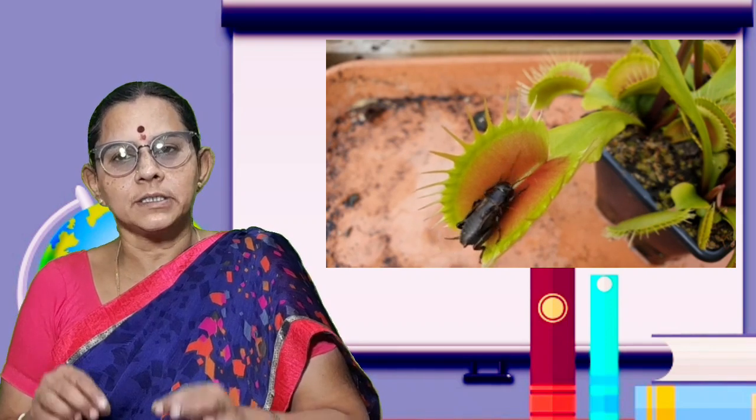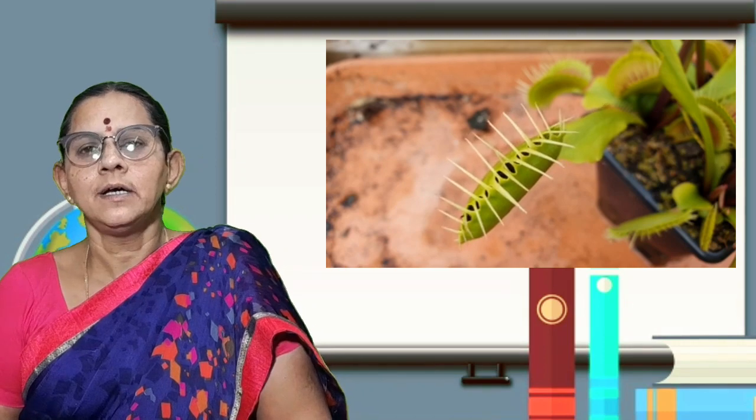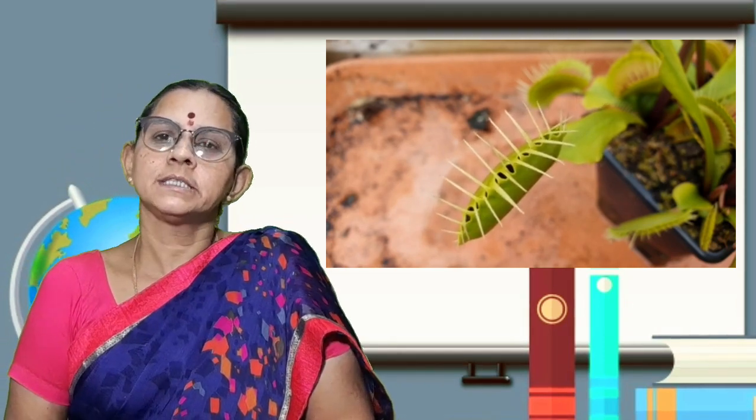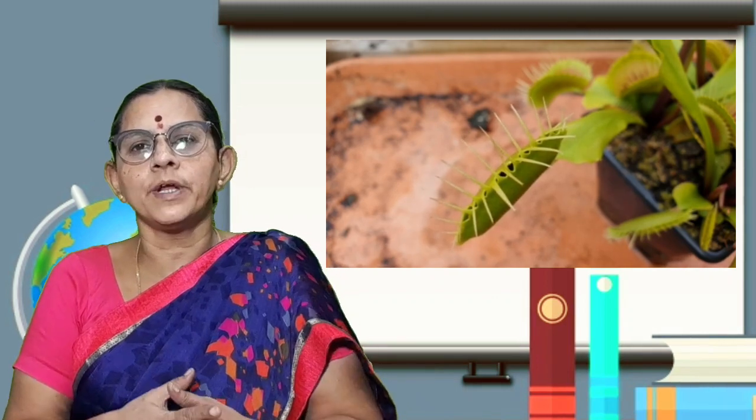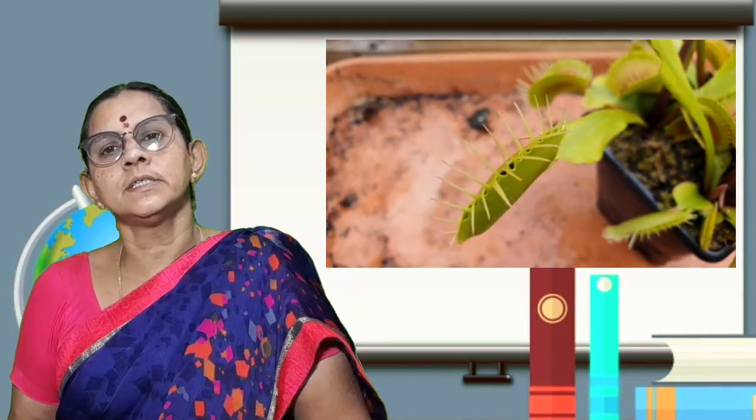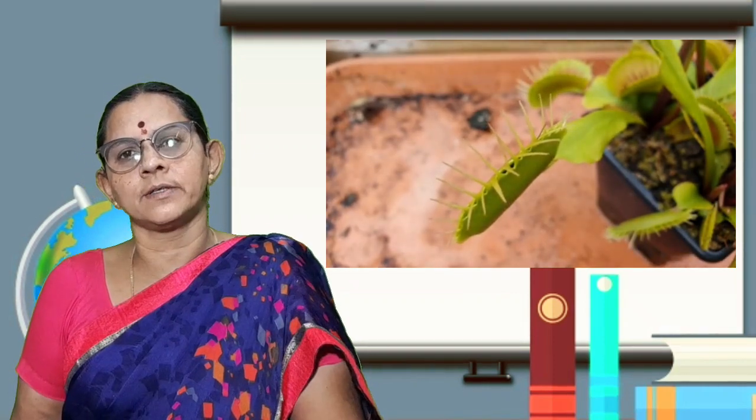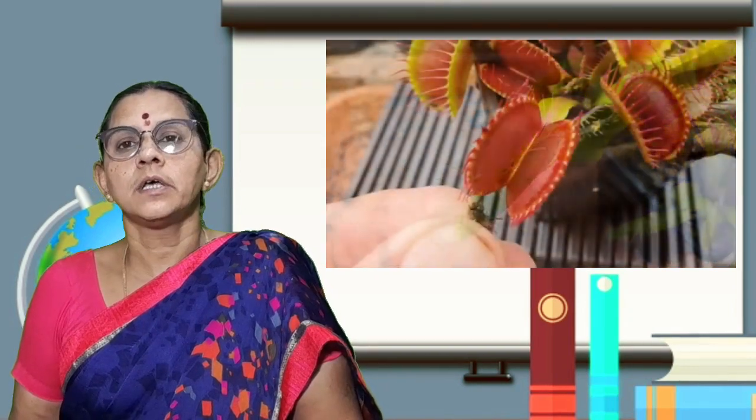Next, insectivorous plants. This is called Venus Flytrap. It is a good example of thigmonasty — when an insect touches the plant, it snaps shut.